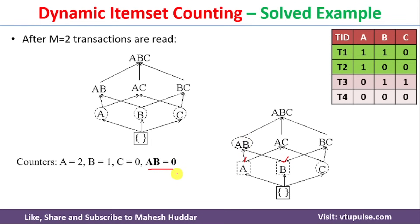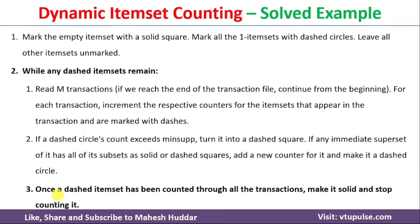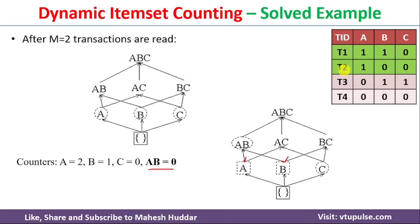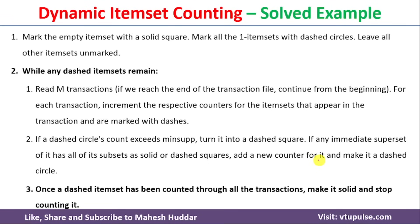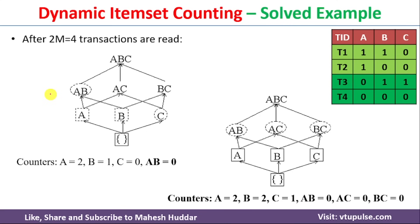Once a dashed item set has been counted through all transactions, it is made solid and counting stops. We have only read T1 and T2 so far, with two more transactions remaining, so we do not make anything solid yet. We go back to the first sub-step and read M=2 more transactions — T3 and T4.